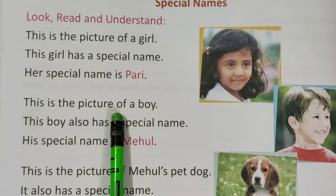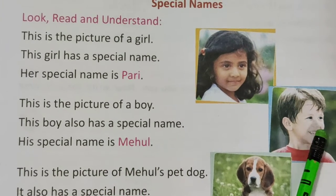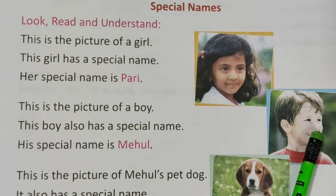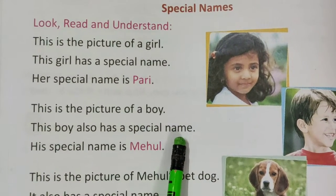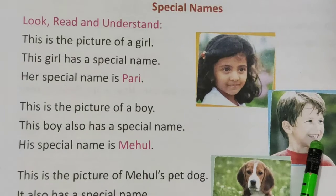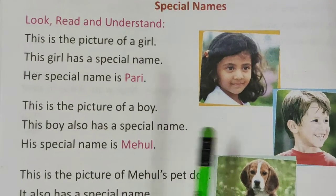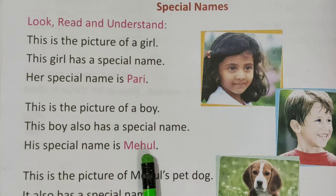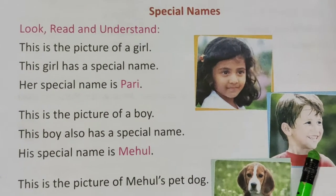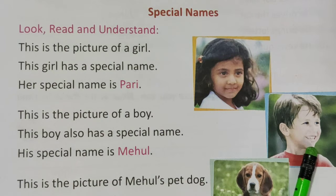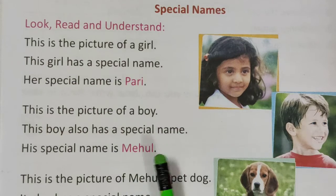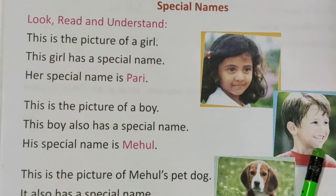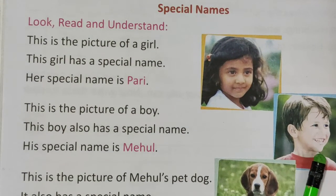This is the picture of a boy. Yeh ek boy ka picture hai. This boy also has a special name. Is boy ka bhi ek special name hai. His special name is Mayhul. Is boy ka special name kya hai? Mayhul hai. Toh Mayhul kya hai? Special name hai, kyunki Mayhul ke naam se is boy ko pehchana jata hai.